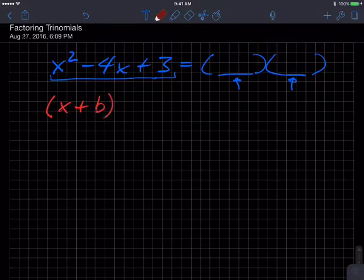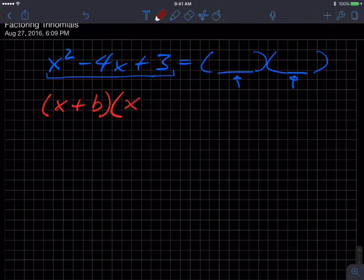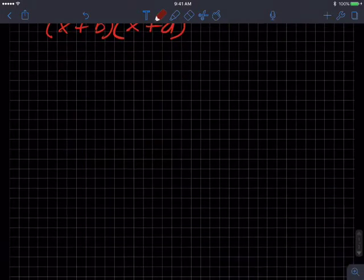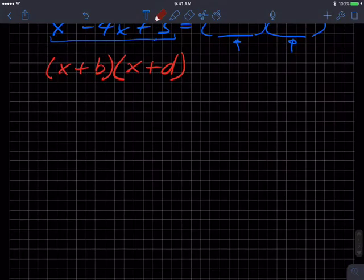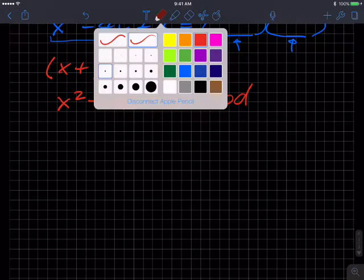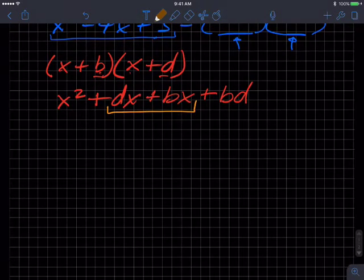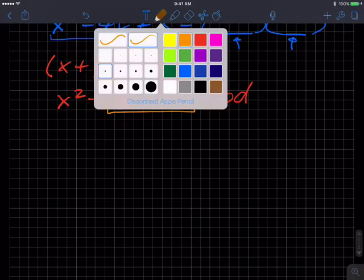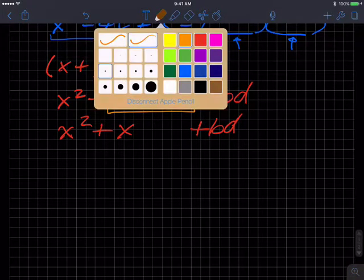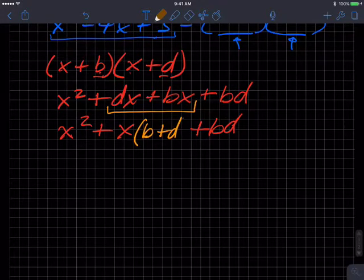Let's do this: x plus b times x plus d. Let's actually do this distribution out. So x times x is x squared, then x times d is plus dx, and then b times x is bx, and then b times d is bd. I can group these two terms and factor out something common to them, the x. So this is x squared plus x factored times b plus d, plus bd.